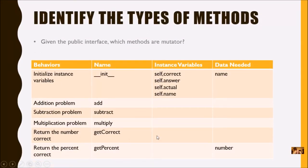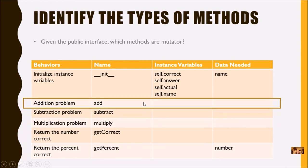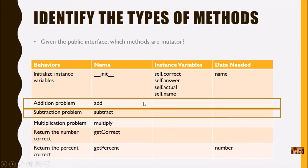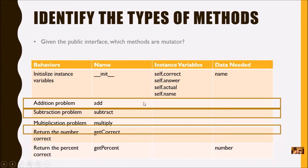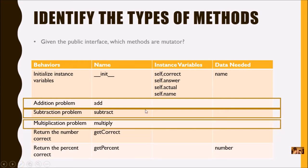From this public interface, which ones are mutators? Think about where changes actually happen. That would be addition, subtraction, and multiplication — all of these change the correct value, the answer, and the actual.